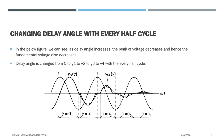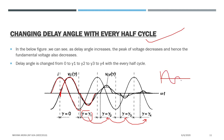By changing the delay angle gamma with every half cycle — progressively increasing from 0 to gamma-1, gamma-2, gamma-3, gamma-4 — the voltage appearing across the capacitor decays in a damped fashion. The fundamental component of this voltage decreases as the delay angle increases. This shows that as delay angle increases, the peak of the applied voltage decreases and hence the fundamental voltage also decreases.